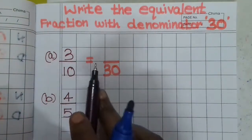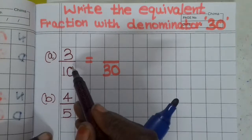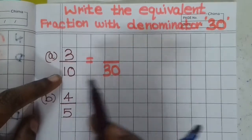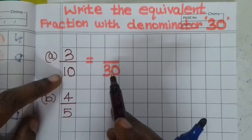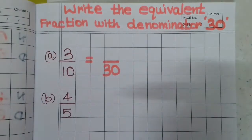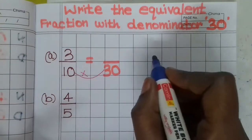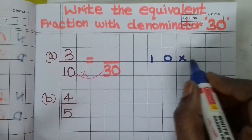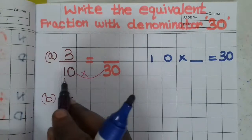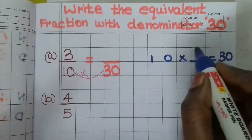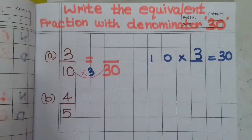To find equivalent fractions, either multiply or divide. We know the denominator part. The denominator is 10 and we need 30. So 10 multiplied by 3 equals 30. We know the denominator, so we multiply by 3. That means 10 times 3 equals 30, so for the denominator we multiply by 3.